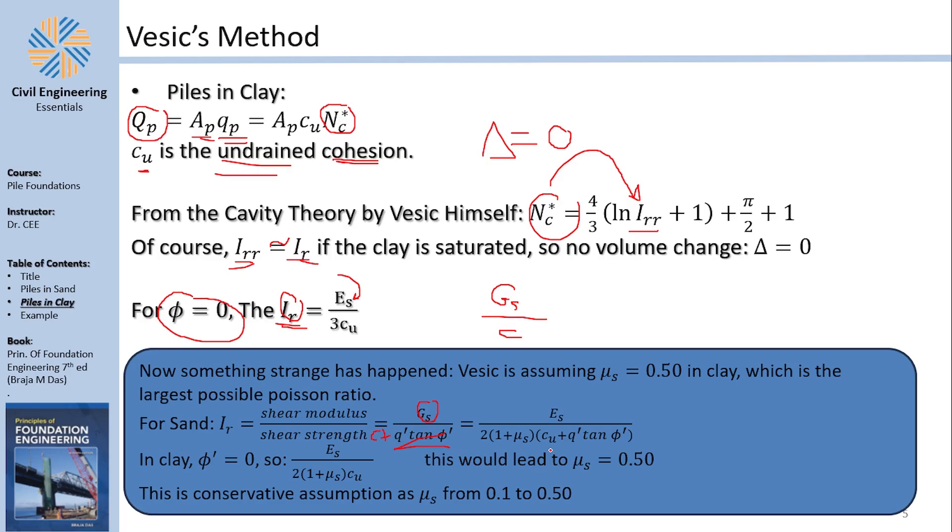But now there is something strange happening here, because it just tells you here is the equation. Now, how did we start from here, shear modulus over C, and get to here? Well, let me explain this to you.